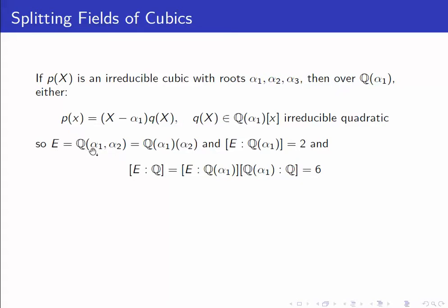And of course, E is the splitting field because once we've adjoined alpha 1 and alpha 2, alpha 3 has to lie in that field as well.